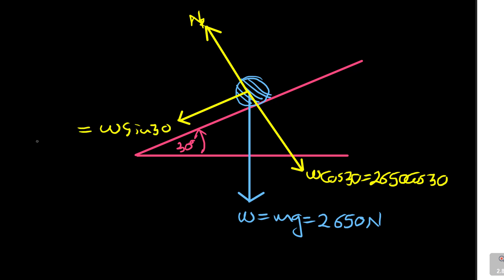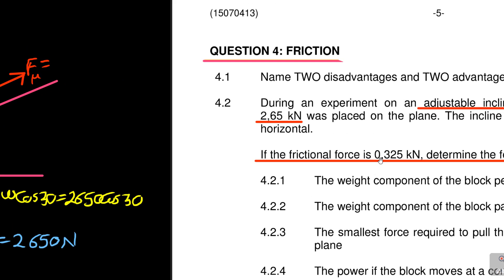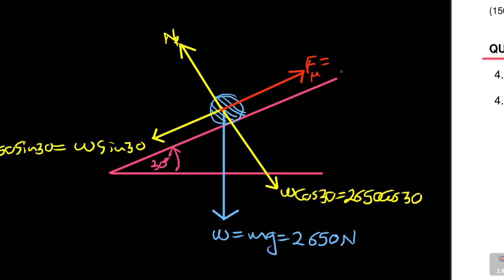And then going up — I'll make it red because there is no one pushing; there is no applied force. Going up is the friction force F. They told us the friction is 0.325 kilonewtons — you multiply by a thousand, that's 325 newtons. Remember: if it's going down on its own, friction always opposes the movement.